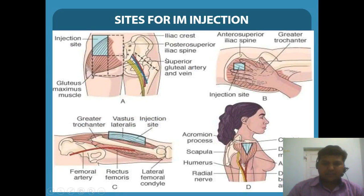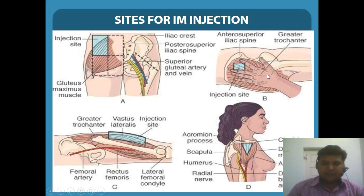To select the site of injection for intramuscular injection, we use methods to prevent injury to the nerve and major vessels. For the posterior gluteal site, we divide the buttock into four quadrants and use the outer upper quadrant. For the posterior gluteal region, keep your palm on the buttocks so the tip of the palm is placed on the greater trochanter, with your thumb directed towards the groin. The index finger is kept on the anterior superior iliac spine and the remaining three fingers rotated backward to the posterior superior iliac spine on the iliac crest. The V-shape area between the index finger and the middle finger is the site for posterior gluteal intramuscular injection.